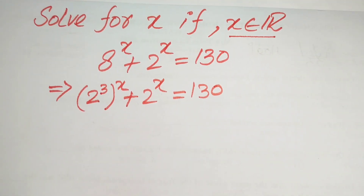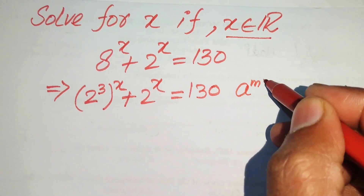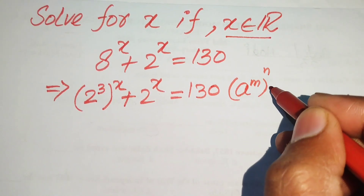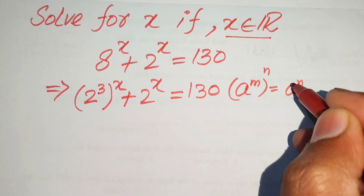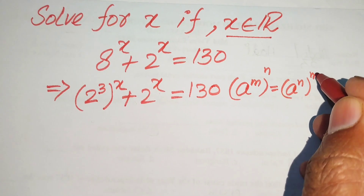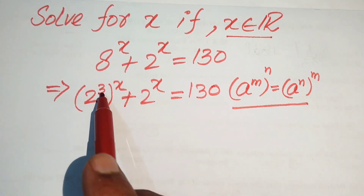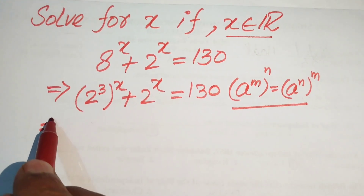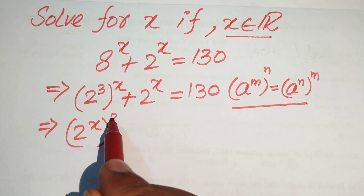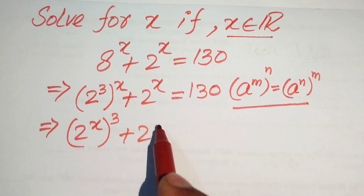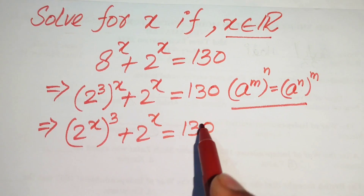We apply the exponential law: if we have a to the power of m, to the power of n, we can interchange the two exponents and write it as a to the power of n, to the power of m. Using this, we rewrite 8^x as (2^x)^3, giving us 2 to the power of x, whole cubed, plus 2 to the power of x equals 130.